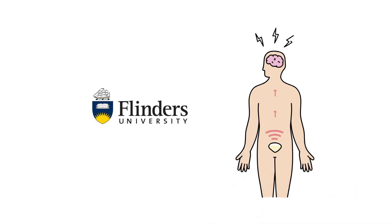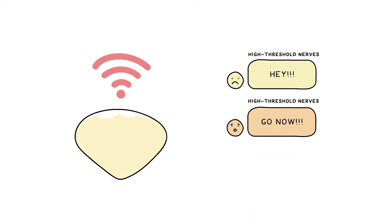It's all down to the signals sent from our bladder to our brain. When our bladder is full, low threshold nerves send signals to our brain to politely tell us to go to the toilet. And when our bladders are really full, high threshold nerves send signals of discomfort and pain, telling us that we need to go to the toilet very quickly.